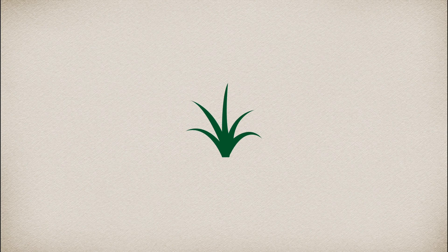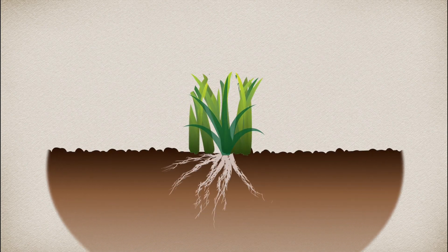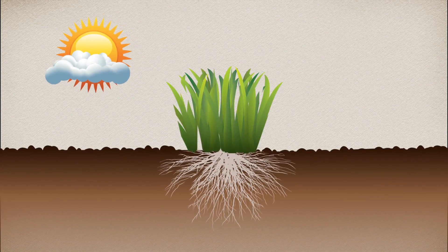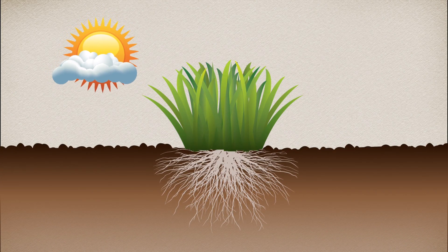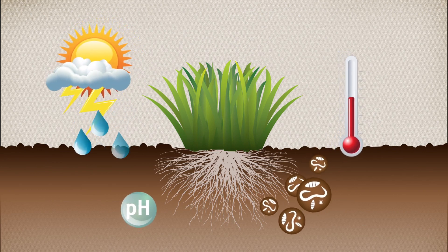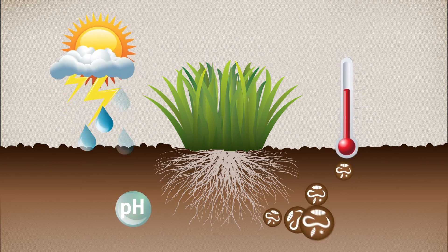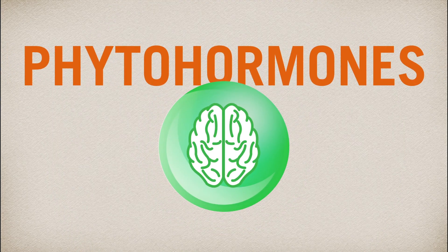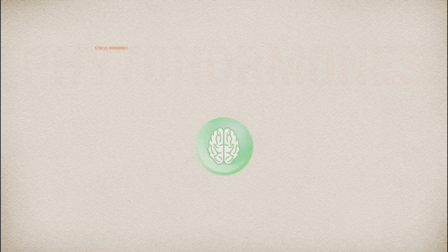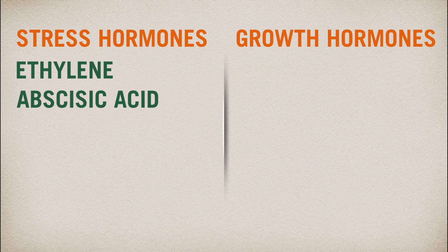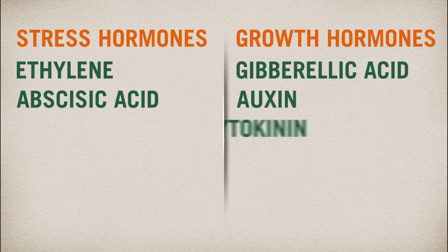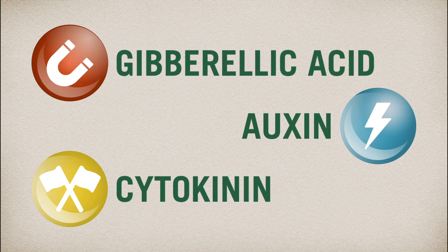Turf grass — from the outside it looks like the simplest of life forms, but look a little closer and you'll see a miraculous factory capturing sunlight and storing energy. Highly complex processes are at work. One of the most critical is the production of phytohormones, which serve as a kind of surrogate brain for the plant. There are two stress hormones — ethylene and abscisic acid — and three growth hormones: gibberellic acid, auxin, and cytokinin. The three growth hormones are the ones professional turfgrass managers are most interested in.